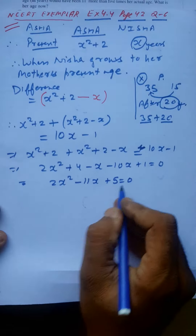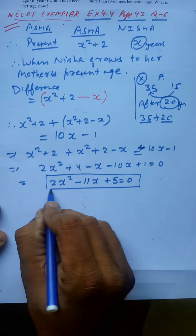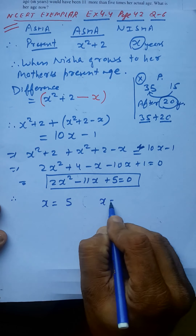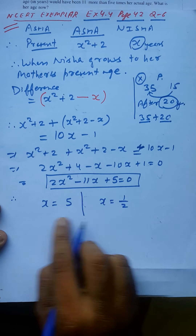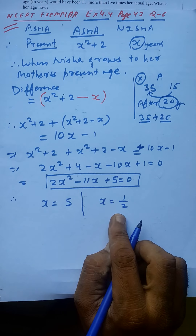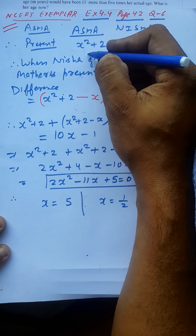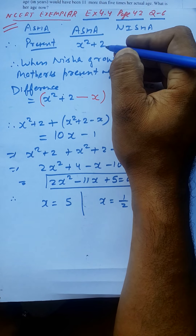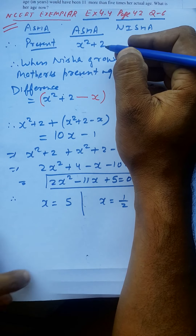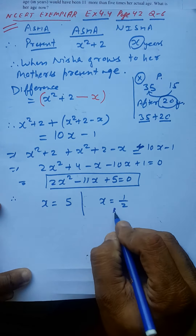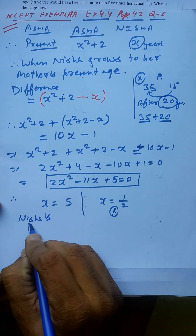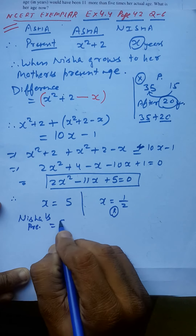We solve this using the quadratic method — the discriminant (D) method. We get x equals 5 or x equals one-half. After finding x, we don't relax — we must check. Nisha cannot be half a year old, because if she were, her age squared would be 1/4. So we reject x = ½, and Nisha's present age is 5 years.